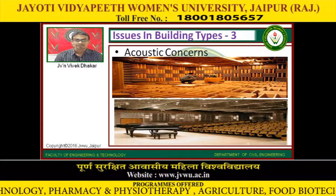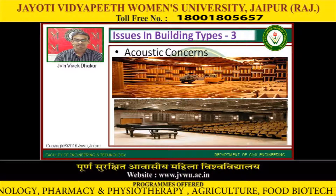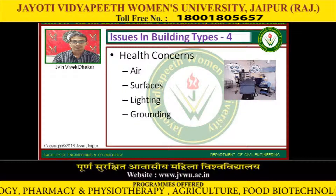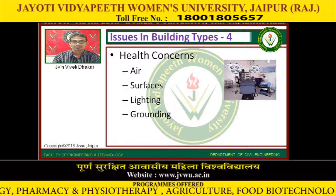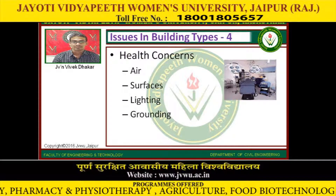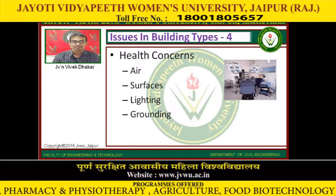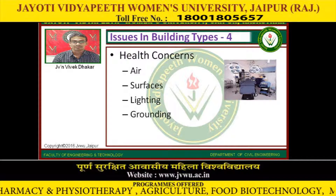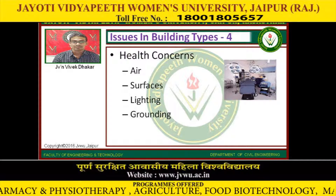The fourth type of building concern is health. Health concerns include tiers, surface, lighting, crowding, and plastics.